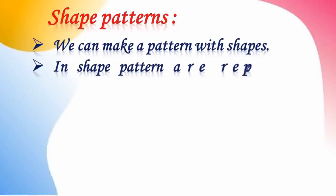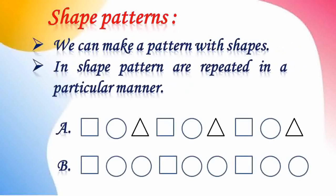Now, shape patterns. We can make a pattern with shapes. In shape patterns, shapes are repeated in a particular manner. First example: square, circle, triangle — same pattern again. Shapes are repeating equally: square, circle, triangle, square, circle, triangle. Second example: square, circle, circle — again square, circle, circle — and so on. The same manner the shapes are repeating. This is called a shape pattern.